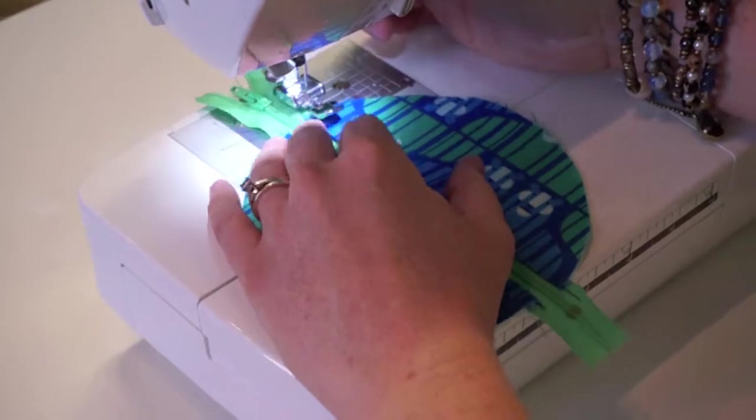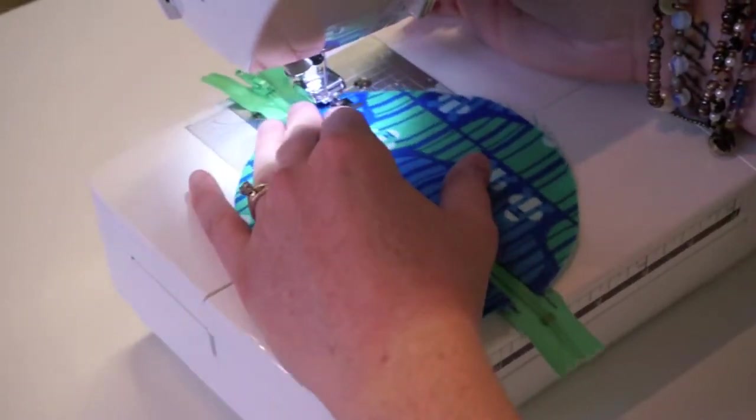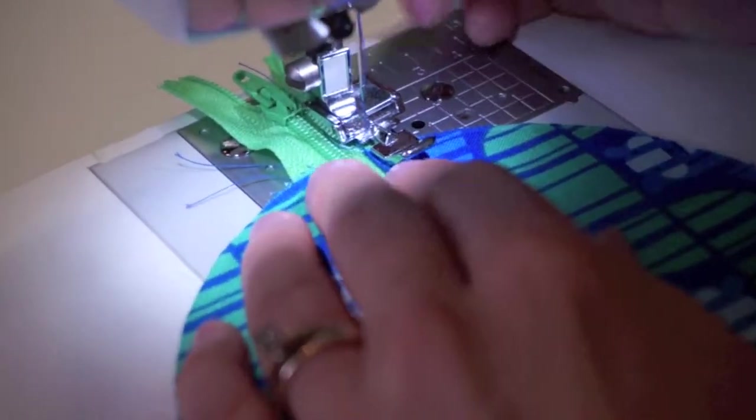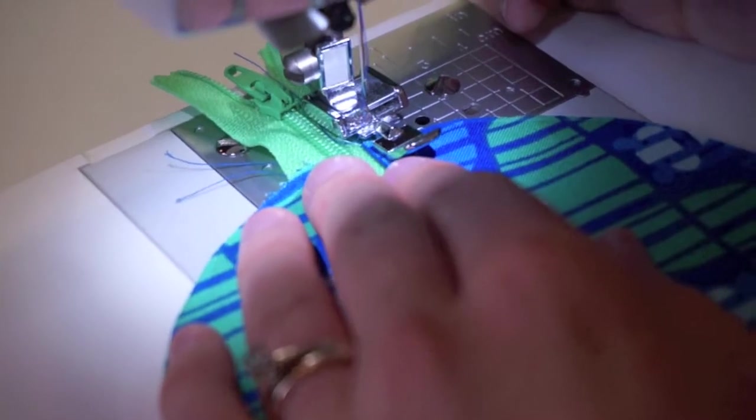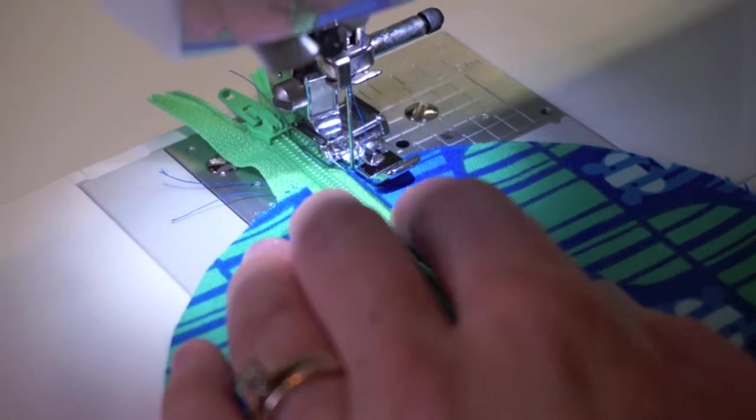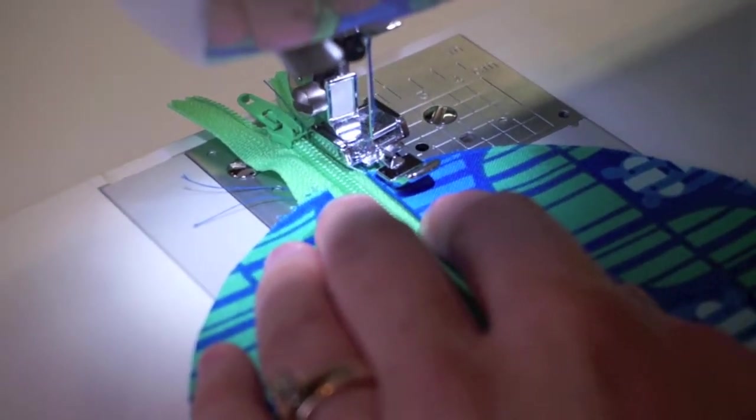This way you can see better how the zipper foot actually stays right up against the zipper teeth there. You see how it doesn't go, how it's just up against it. So I'm going to move my needle because if I were to put it down there, I wouldn't see much of a top stitch. So I'm just going to move it over just barely.